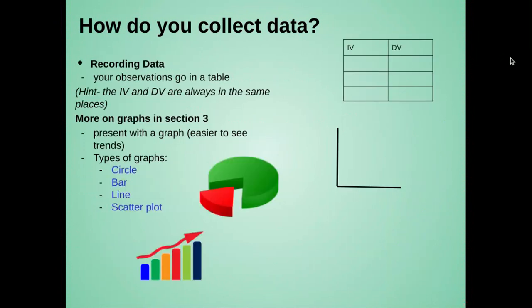So how do we collect that data? We like to put it into a table. I'll give you a hint. The independent and dependent variables are always in the same places in our data tables. The independent variable should always go in the left-hand column. The dependent variable, those measurements that you take, should always go in the right-hand columns. If you have multiple dependent variables, you would just add another column over here.